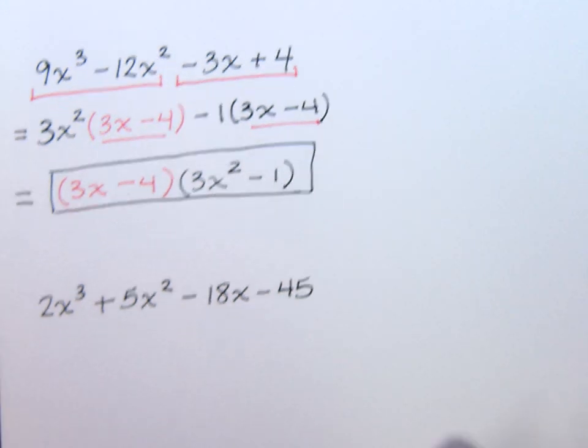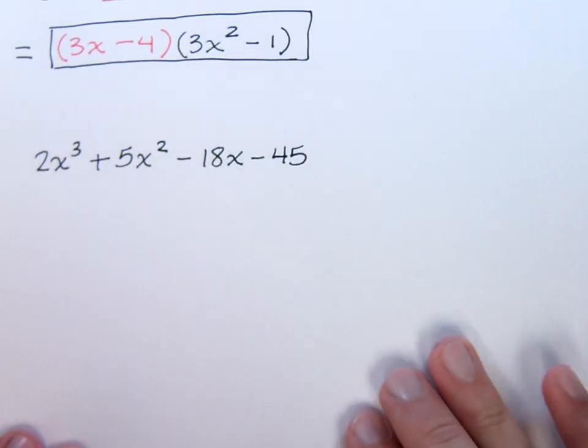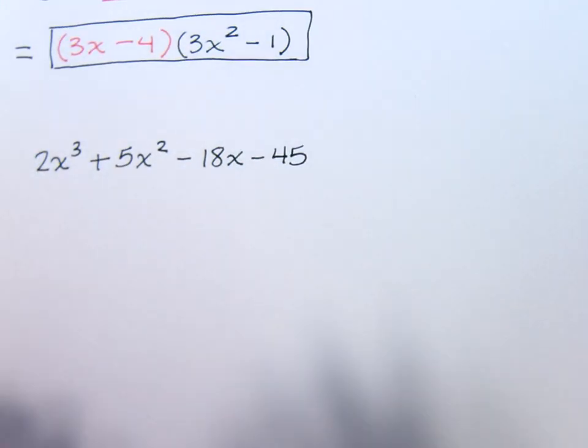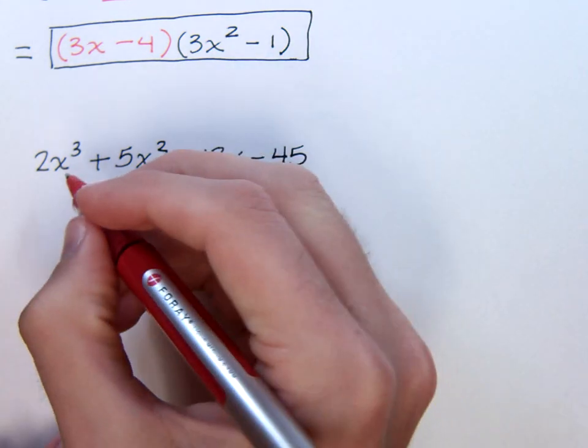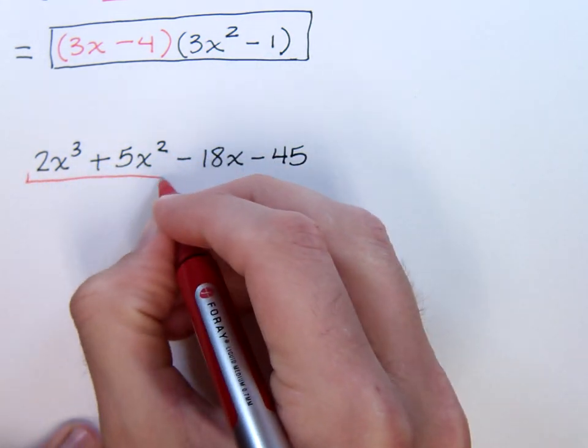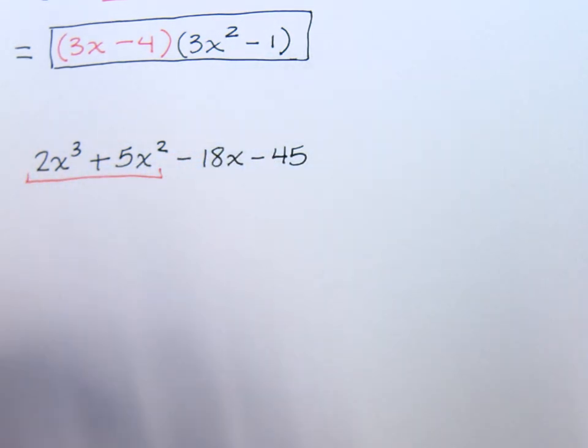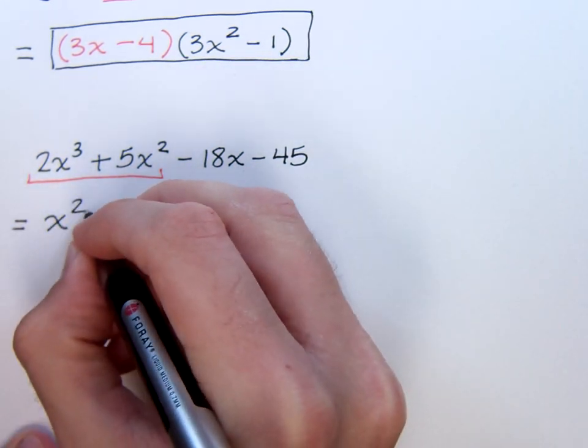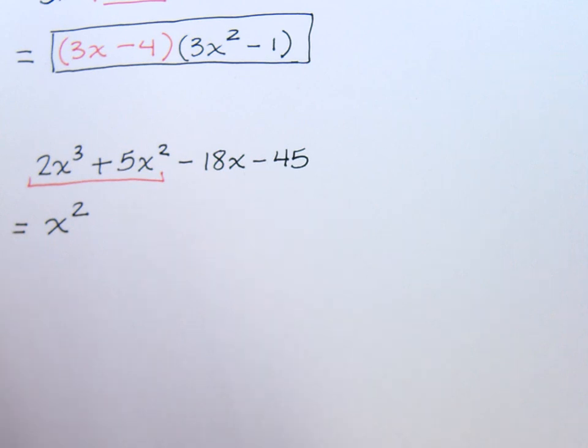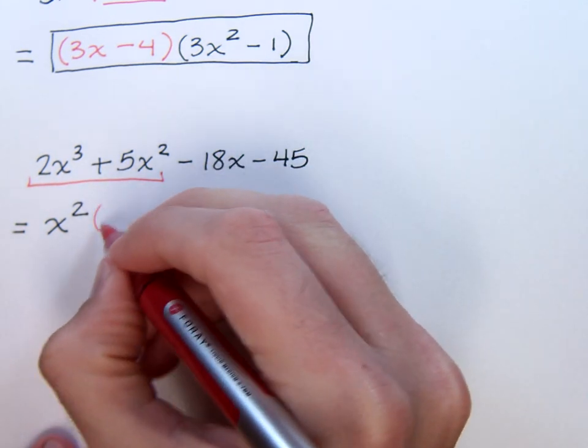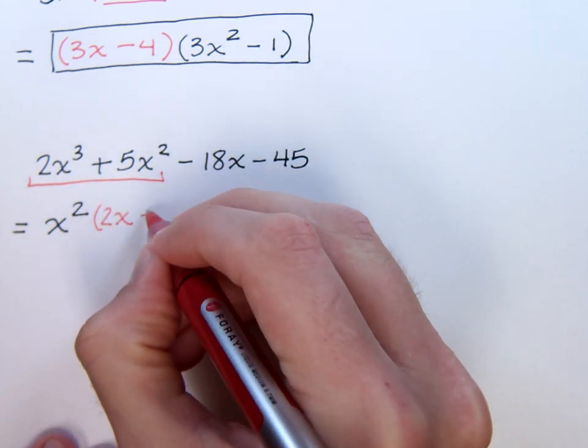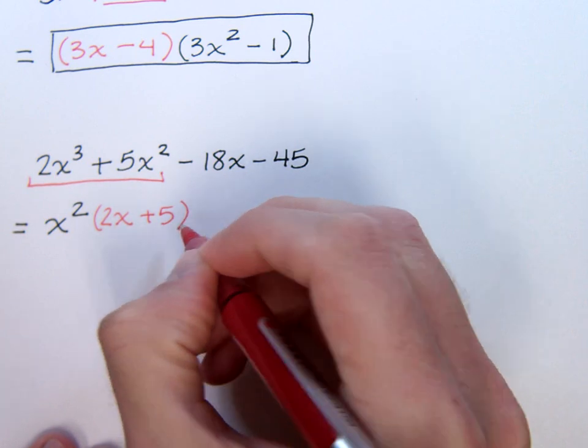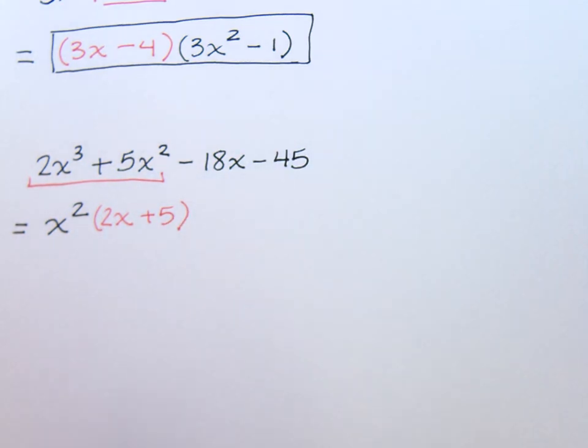Now, let's take a look at this last problem right here. A little bit more challenging. In the first group right here, the common factor is just going to be x squared. Nothing more than that. If I take out x squared, I'm going to be left with two x plus five. Okay, no big deal, just like we've done everything else before.